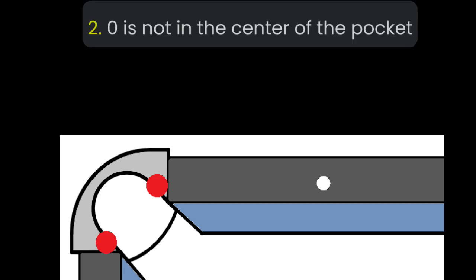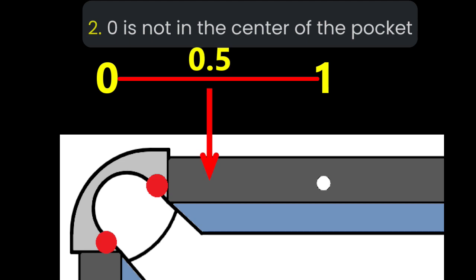The first problem is that zero is not the center of the pocket. Now, this doesn't usually come into play as a starting diamond or an aiming diamond, but it's more about how we visually divide up the first diamond into decimals. If you visualize zero in the center of the pocket, 0.5 would be about here, but actually the true location of zero puts 0.5 here, which is a very different location to Aim at and changes the entire scale of that gap.